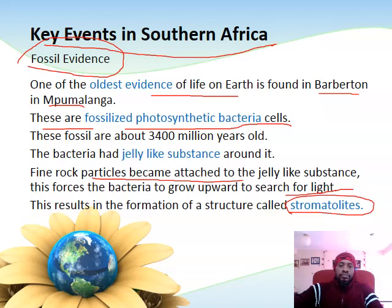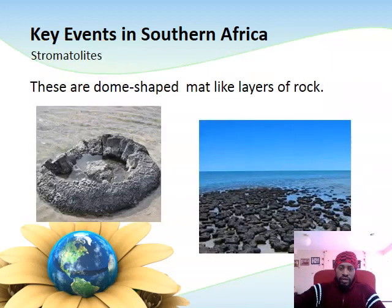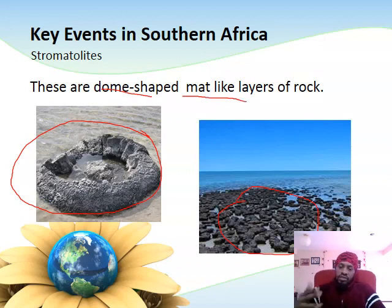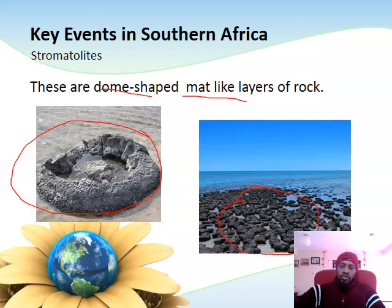These are the stromatolites — we can see here a whole stack of them. They look dome-shaped, like mat-like layers of rock, because bacteria were being pushed upwards so they could move out to get exposure to the sun and use it for photosynthesis.